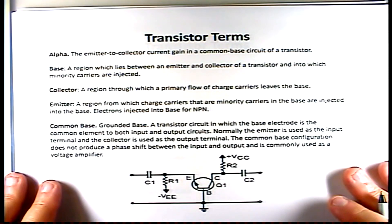Let's go over transistor terms. Alpha is the emitter-to-collector current gain in the common base circuit of a transistor. A base is the region that lies between the collector and the emitter. A collector is the region through which we have the primary flow of charge carriers leaving the base. An emitter is the region in which we have the injected charge carriers.